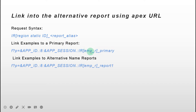Here is the request syntax in the URL. If you want to link to alternative named reports, you need to put the request syntax here. 'Report1' is the alternative named report's alias.